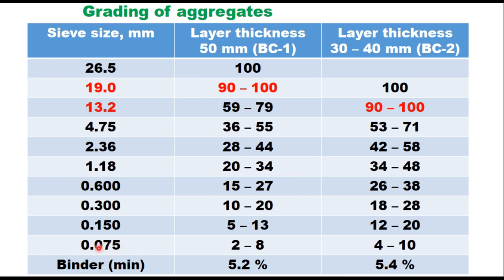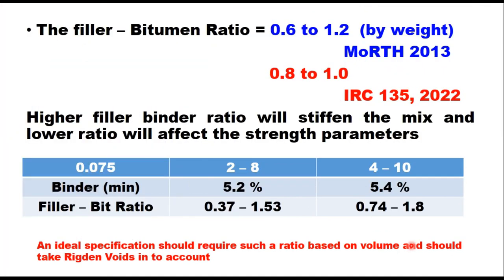The minimum binder content recommended in MORTH specifications is 5.2% for BC1 and 5.4% for BC2. The percent passing 75 microns of 2 to 8% or 4 to 10% plays an important role in the performance of the mix. Excessive filler reduces the VMA to a point where sufficient bitumen for a durable mix cannot be added, and high filler content also increases aggregate surface area, reducing asphalt film thickness. A typical specification requires the filler-to-bitumen ratio to be between 0.6 and 1.2 by weight, as adopted in MORTH 2013. IRC 135 (recently published) suggests a narrower range of 0.8 to 1.